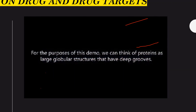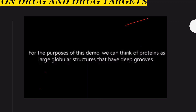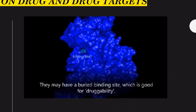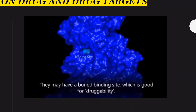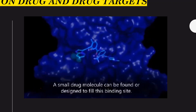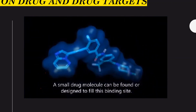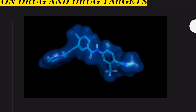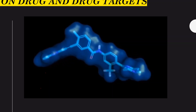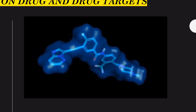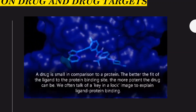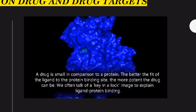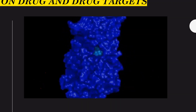For the purpose of this demo, we can think of a protein as a large globular structure with binding sites, which is good for drug-ability. A small drug molecule can be designed to fill the binding site. The drug is small in comparison to the protein — the better the fit of the ligand to the protein binding site, the more potent the drug can be. This is often explained using the lock and key model of ligand-protein binding.